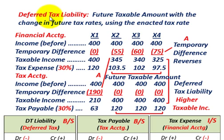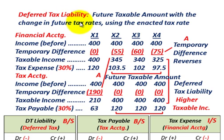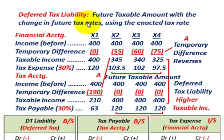What we're going to be going over here is a deferred tax liability and also a deferred tax asset, and we're going to look at the effect that these have when we have a change in future tax rates. We'll start with the deferred tax liability, which is really a future taxable amount, and look at it with a change in future tax rates using the enacted tax rate.